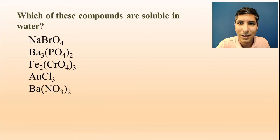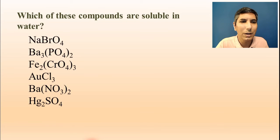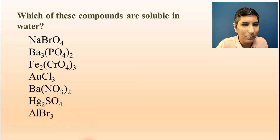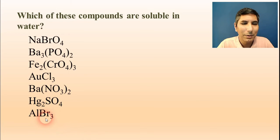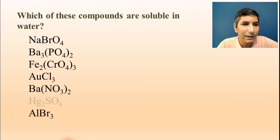Barium nitrate: the very first rule is that all nitrates are soluble, so yes, barium nitrate is going to dissolve in water. Mercury(I) sulfate: sulfates are generally soluble, but this was one of those six exceptions, so it's not going to dissolve in water. Aluminum bromide: all bromides are soluble, right? Except for silver, lead, and mercury — and this is not one of those exceptions — so aluminum bromide is certainly going to dissolve in water.